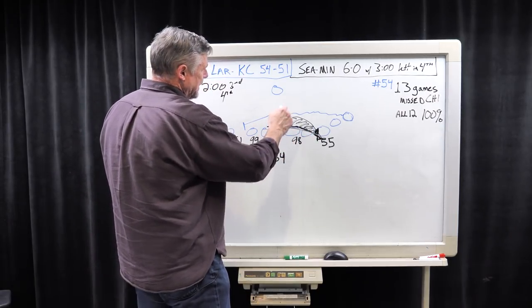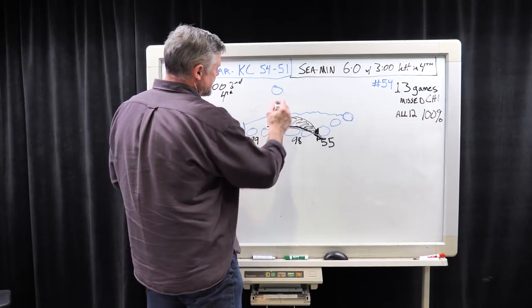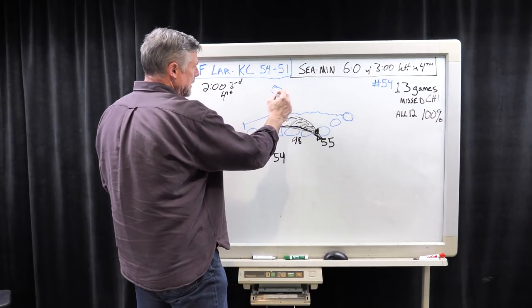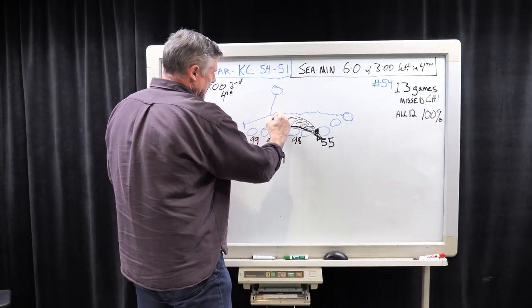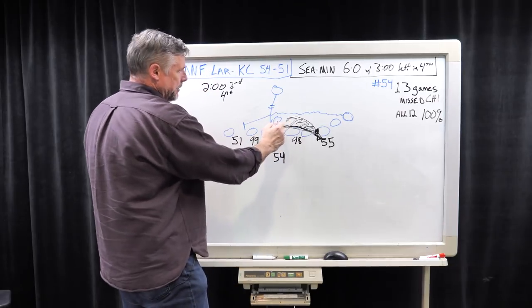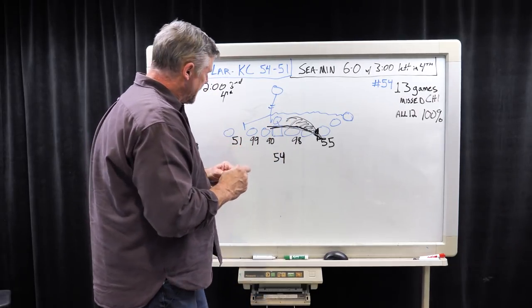He got the initial hit. The handoff comes right here from Kirk Cousins, and I think it was Latavius Murray, Dalvin Cook, whoever, right here. And he was able to get the hit and slow him down. The other thing that happened,